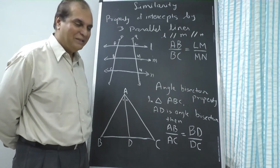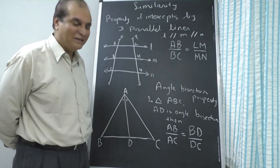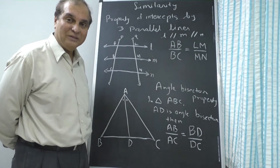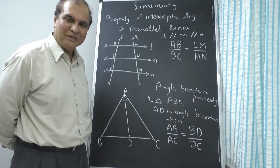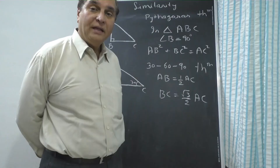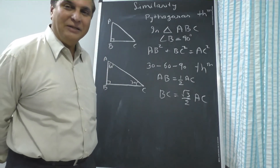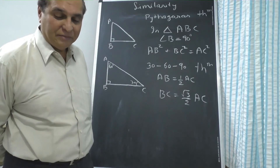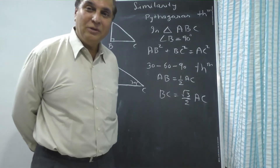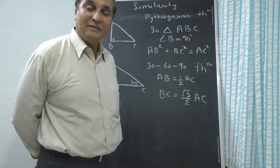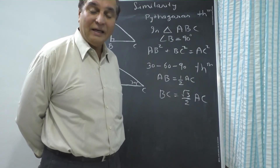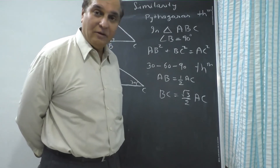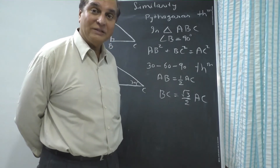One related concept is Pythagoras theorem, which is proved from similarity — by using similarity we can prove Pythagoras theorem. This is also related to similarity, and in proofs sometimes you need mixed sums of similarity; sometimes you have to use Pythagoras. If you see a right angle triangle, it must strike in your mind that you can use Pythagoras theorem.